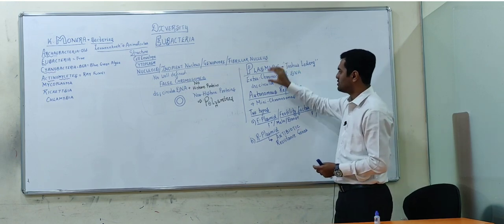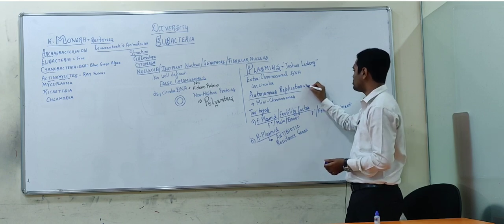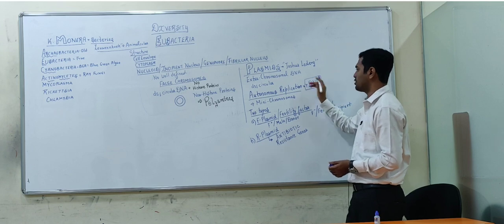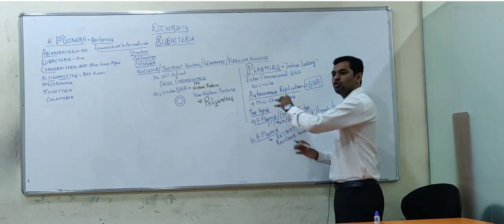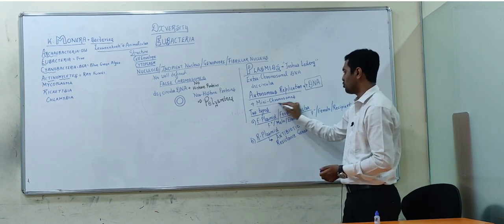The unique feature of plasmid is autonomous replication, and that is why we use them in R-DNA technology. That is recombinant DNA technology. When we put in desired gene, the plasmid will replicate it too. They are also known as mini-chromosomes.